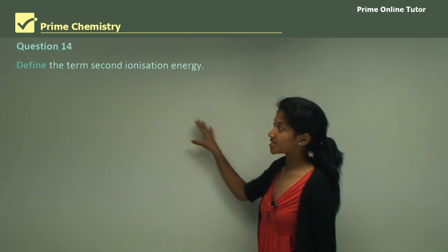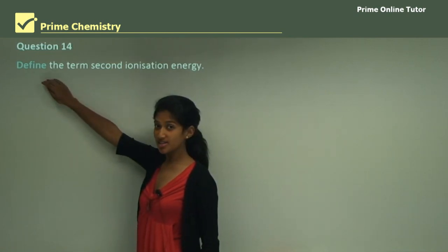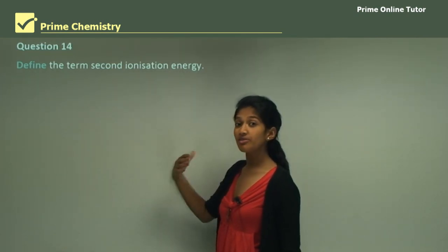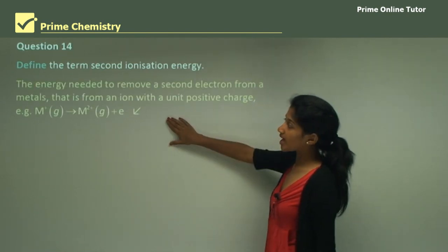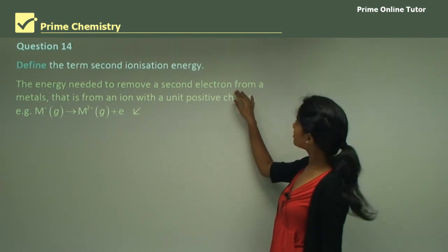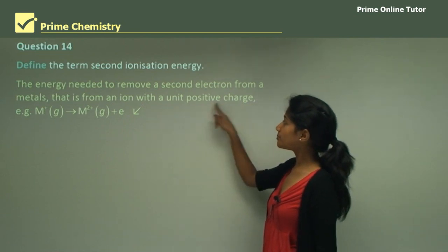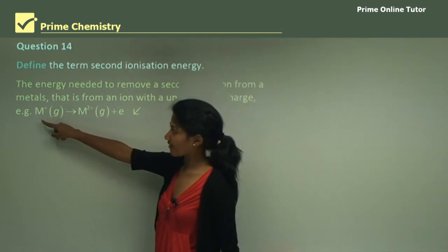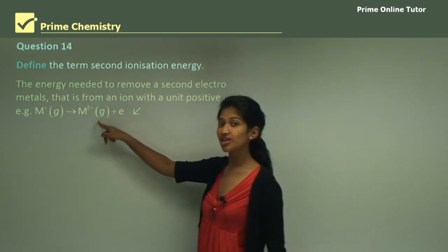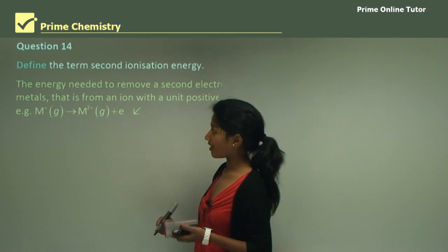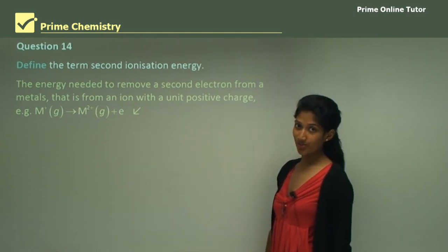Question 14: define the term second ionization energy. The key verb is 'define.' The answer is: the energy needed to remove a second electron from a metal ion with a 1+ charge. This is represented by the metal ion losing a further electron to give a metal ion with a 2+ charge.